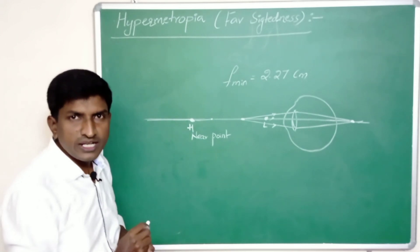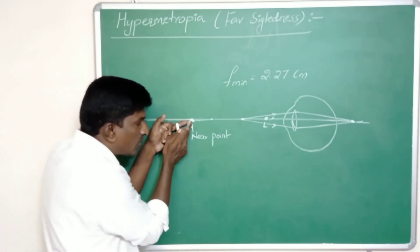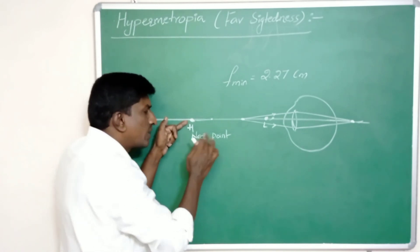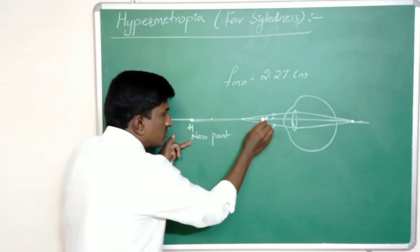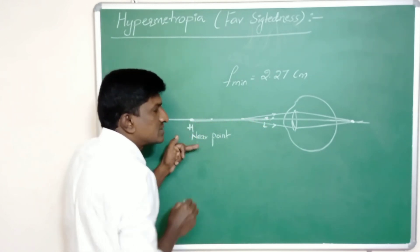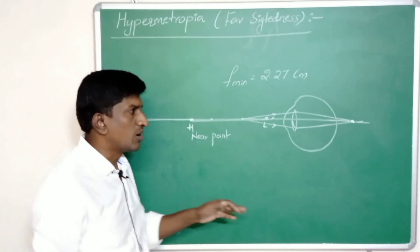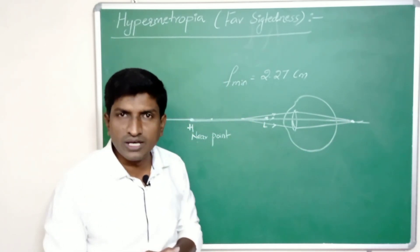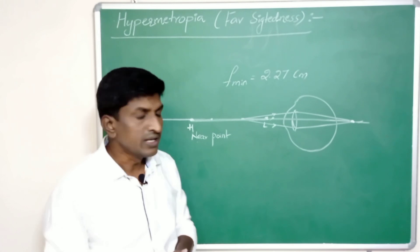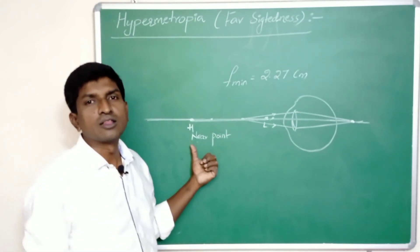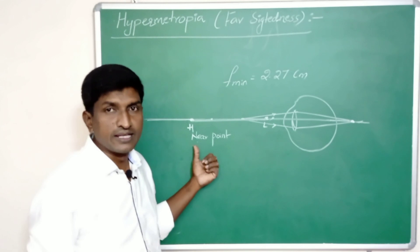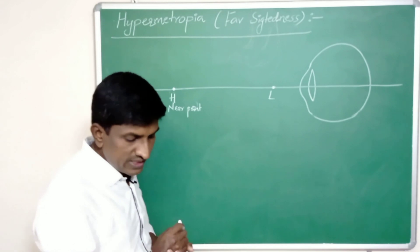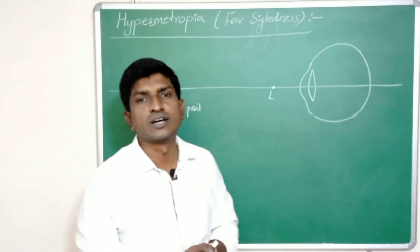Up to this near point the person can see all objects clearly. More near than this point, between L and H, the images are formed outside the retina so they are blurred. Up to the near point the person can see all objects clearly.